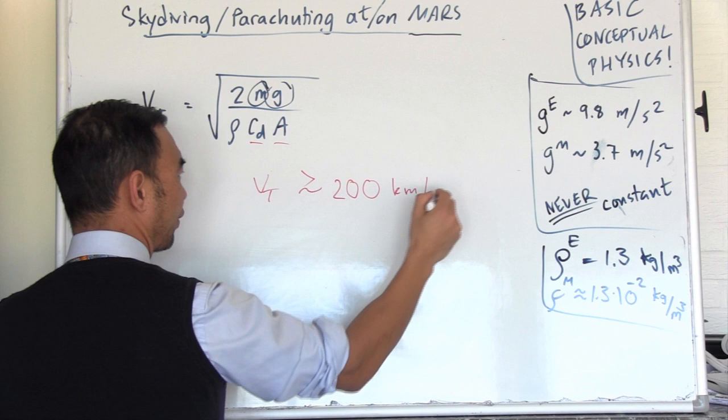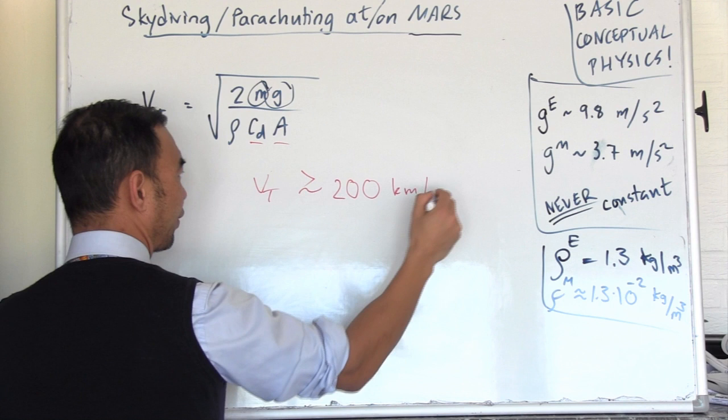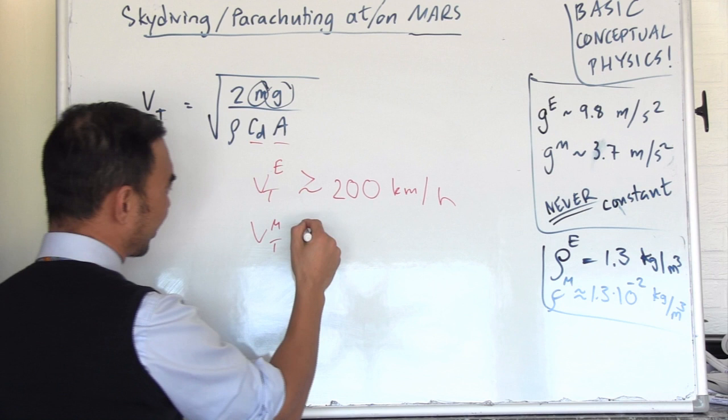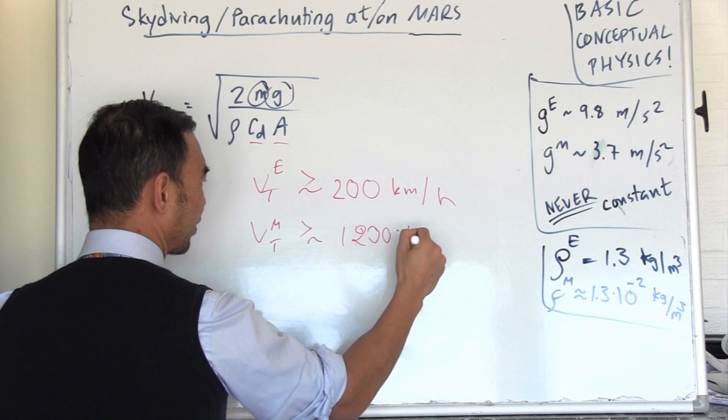Before you go, for those who don't like mathematics, you cannot really influence G or rho that much once you're on Mars. But what you definitely can do is modify these two variables, CD and A. On Earth you would have a terminal velocity in excess of 200 kilometers an hour. On Mars, I have done the math, it would be six times faster. You will be in excess of 1200 kilometers an hour.